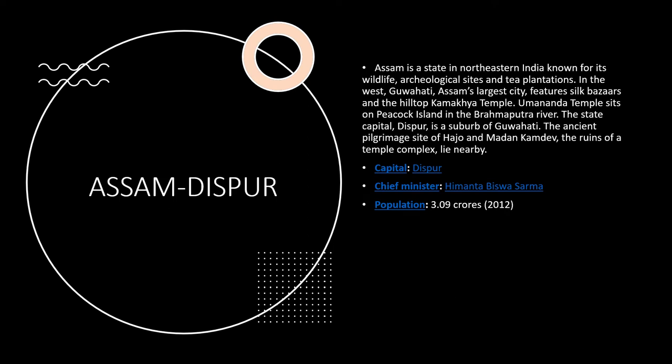The next one is Assam and its capital is Dispur. Assam is a state in northeastern India known for its wildlife, archaeological sites and tea plantations. In the west, Guwahati is one of the larger cities, with silk bazaars and the hilltop Kamakhya temple. The Umananda temple sits on Peacock Island in the Brahmaputra river. The state capital Dispur is a suburb of Guwahati. The ancient pilgrimage site of Hajo and the ruins of a temple complex lie nearby.